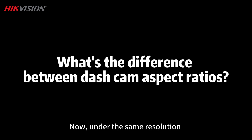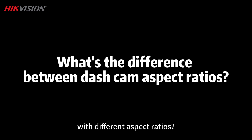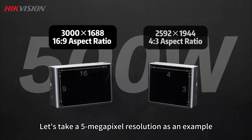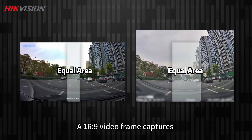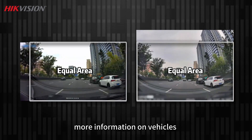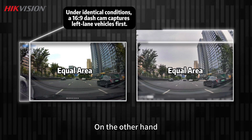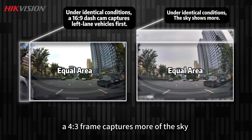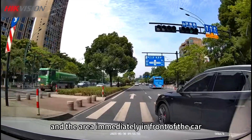Now, under the same resolution, what differences are there between dashcams with different aspect ratios? Let's take a 5 megapixel resolution as an example. A 16:9 video frame captures more information on vehicles and pedestrians on the sides. On the other hand, a 4:3 frame captures more of the sky and the area immediately in front of the car.